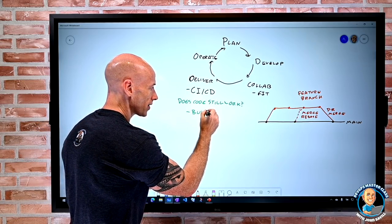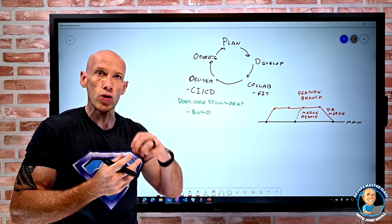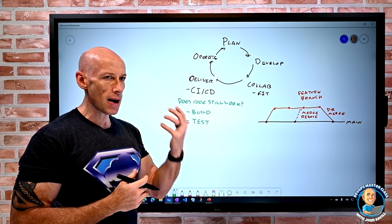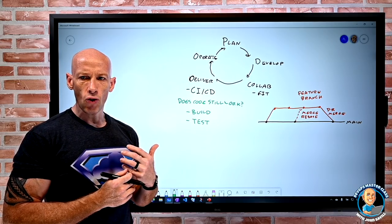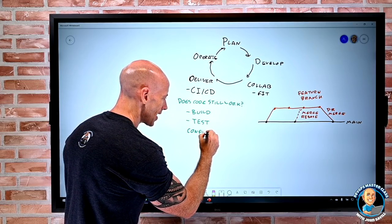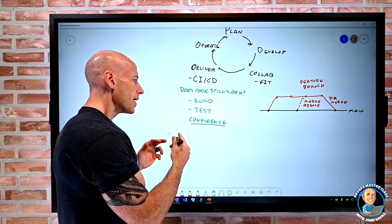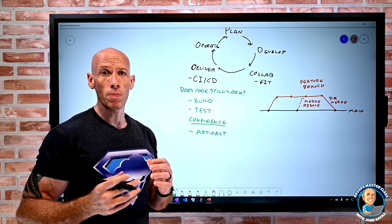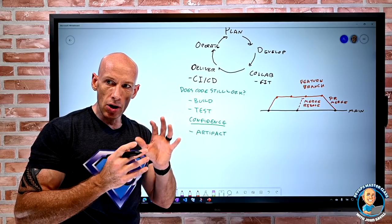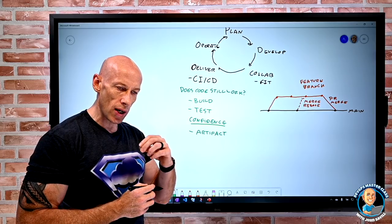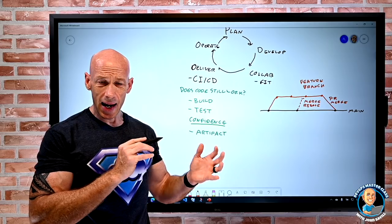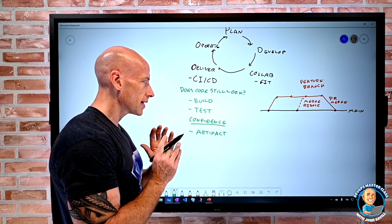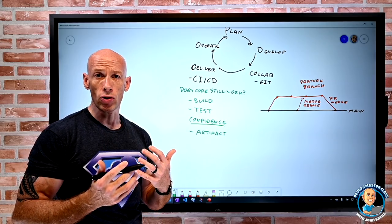Does it still build? Yes, I may have fixed the merge conflicts, but does it actually still compile and create what I want? Then I need to do some tests within the scope of the pipeline to get confidence that it's still performing as expected. It's all about gaining that confidence. Then I can actually build some kind of artifact — that could be an image, a zip file, or a Docker image for containers — and push it to some kind of registry for use further on.